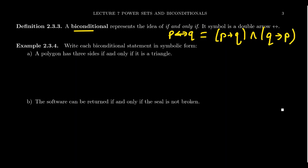The biconditional statement infers implications in both directions. The premise P implies the conclusion Q, but conversely, the conclusion Q implies the original premise P as well. We don't need to separately include the inverse or the contrapositive because they are logically equivalent to what's already listed. The biconditional is a conditional paired with its converse — hence 'bi' — meaning the two notions are logically the same with respect to truth values.